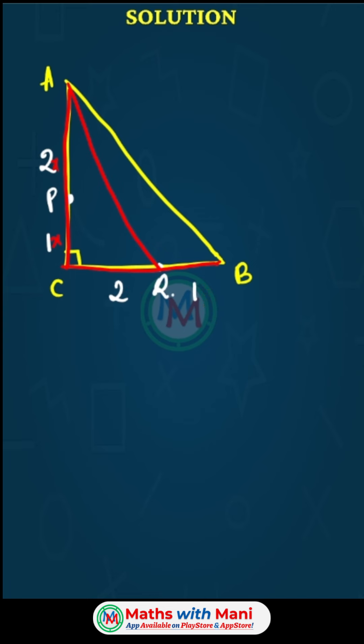Since you are appearing for competitive exams, you have to solve in very less time. Here 2:1 means 3 parts, so AC is 3 parts and BC is also 3 parts. For a right angle triangle, the hypotenuse will be 3√2 parts if we take an isosceles right triangle for simplification.